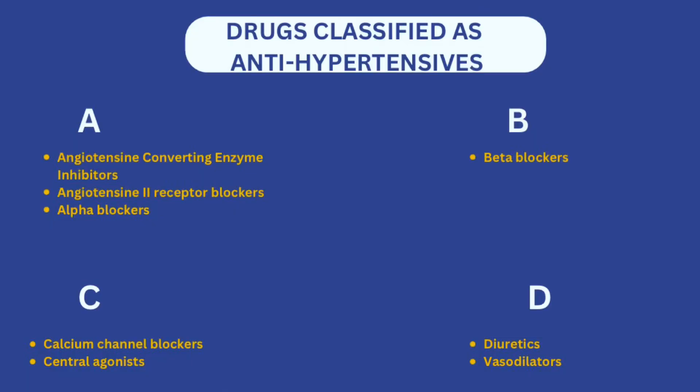There are a number of classes of medications used to treat hypertension, and a very simple way to remember them is AECD. A stands for Angiotensin Converting Enzyme inhibitors, also A for Angiotensin 2 Receptor Blockers, and Alpha Blockers. B is for Beta Blockers. C is for Calcium Channel Blockers and Central Agonists. D is for Diuretics and Vasodilators — if you consider the word 'dilators' you can use D to remember vasodilators. So we have A, B, C, D.